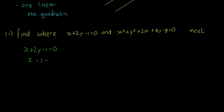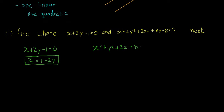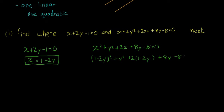First, take the line equation x + 2y − 1 = 0 and rewrite it as x = 1 − 2y. Then substitute this expression for x into the circle equation x² + y² + 2x + 8y − 8 = 0, replacing every x with (1 − 2y). This gives us (1 − 2y)² + y² + 2(1 − 2y) + 8y − 8 = 0.